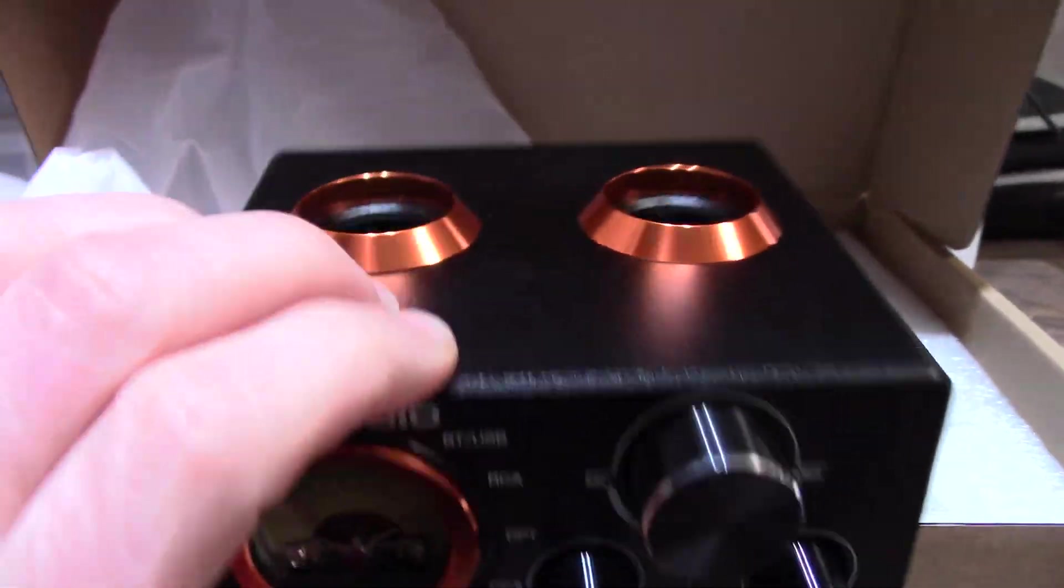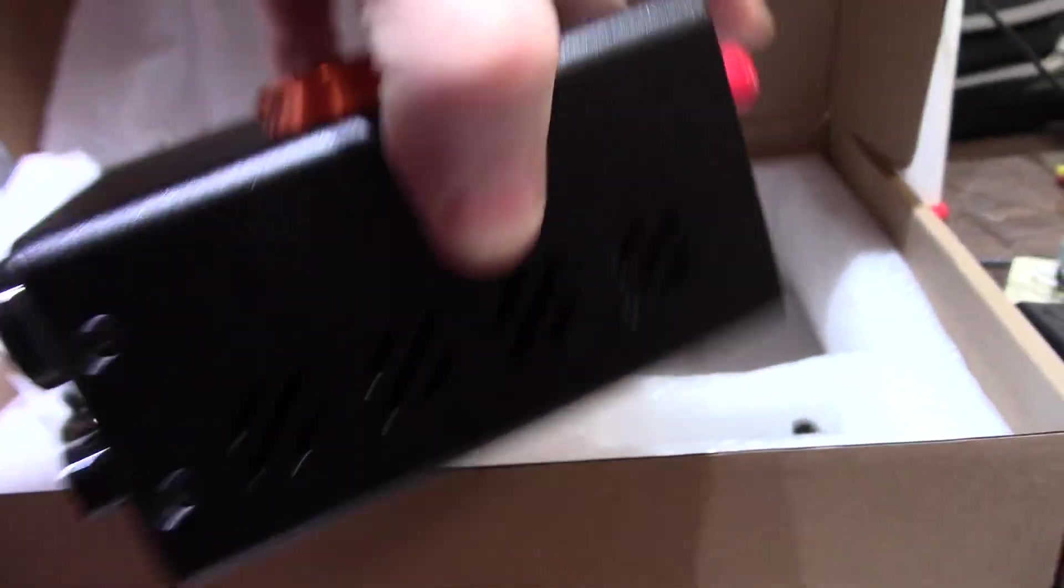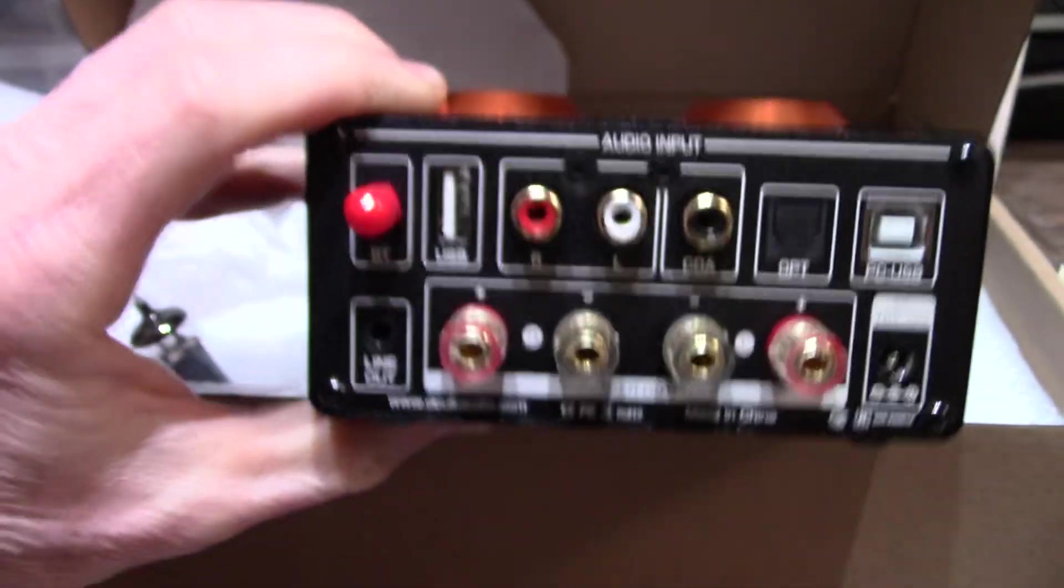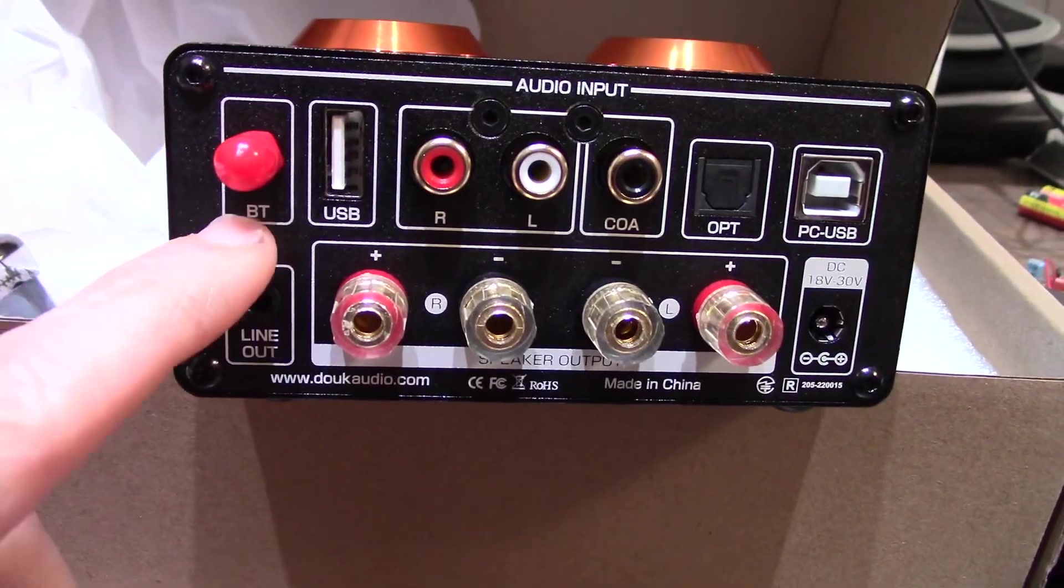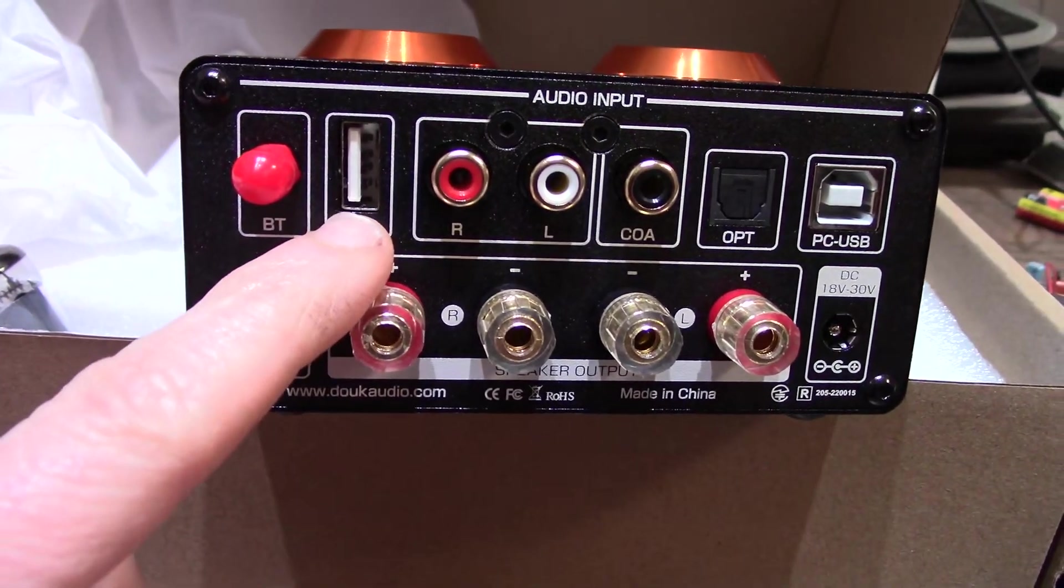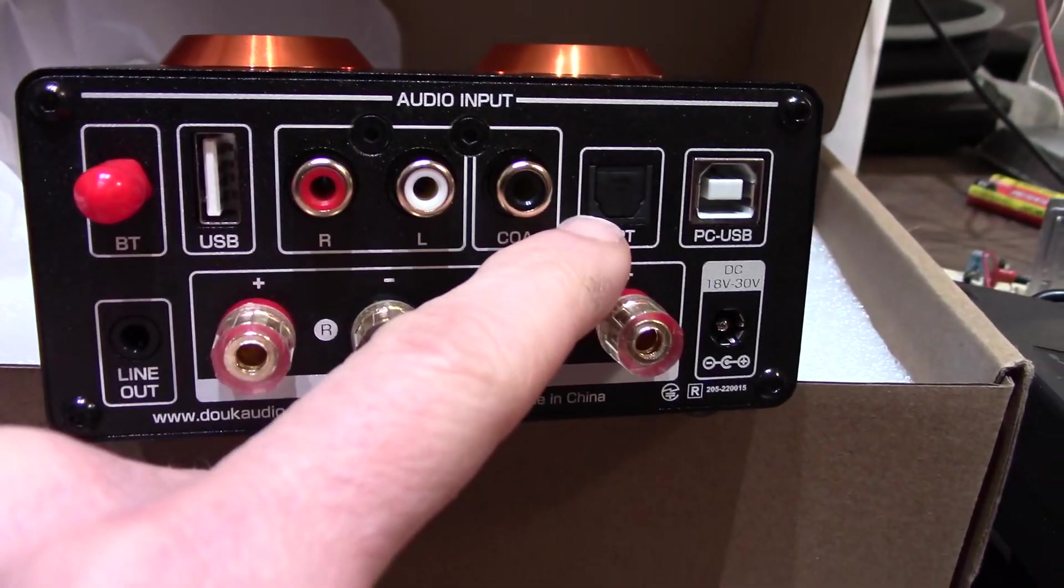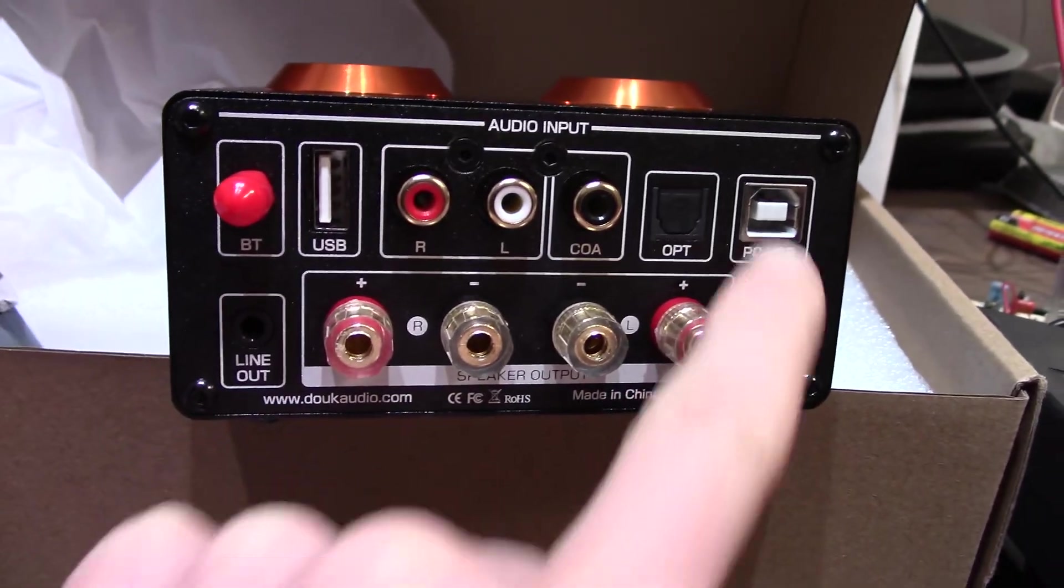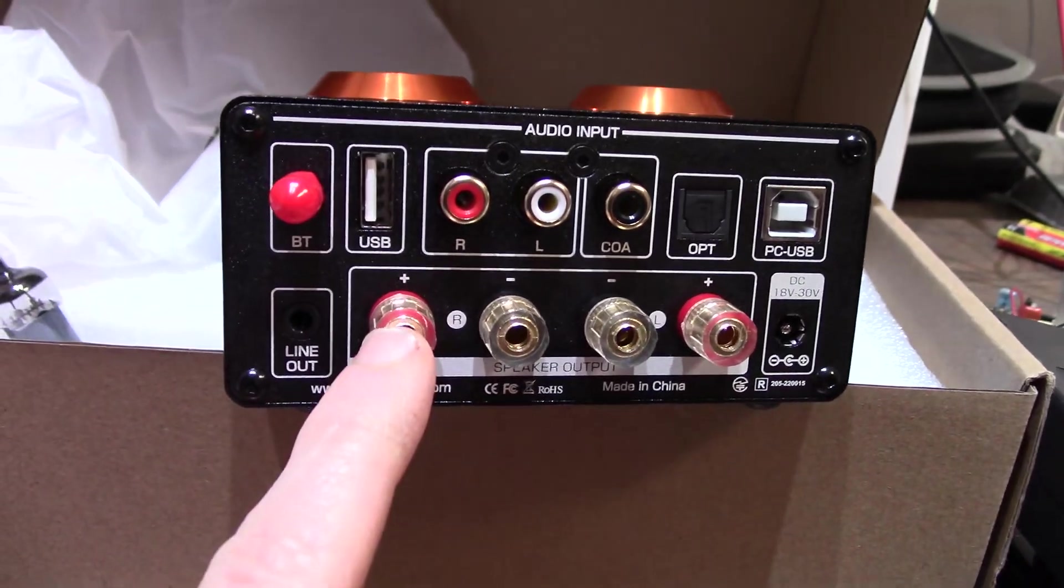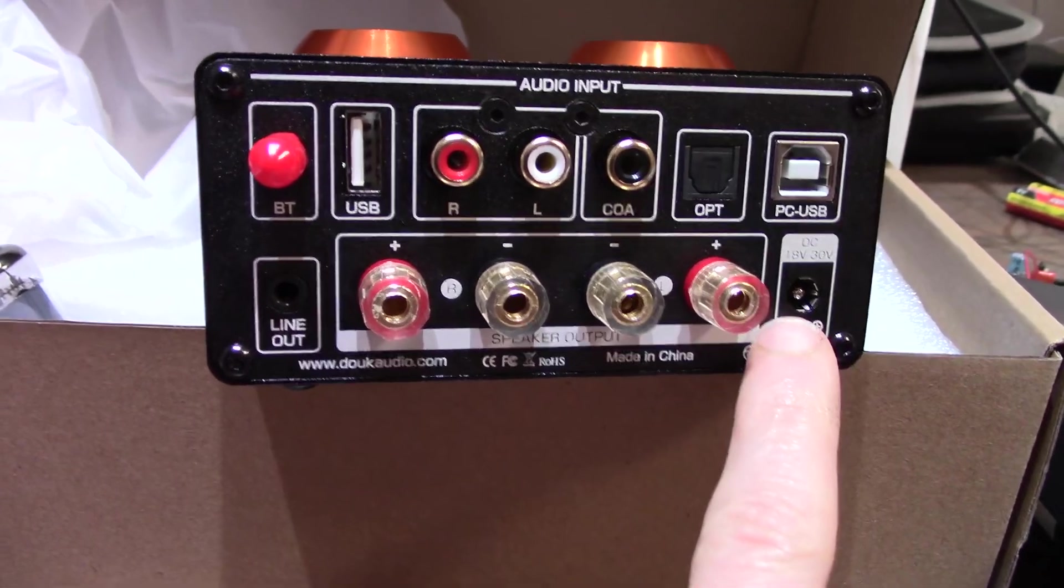On the top, we have sockets for tubes. On the sides, there are vents. And here's the back. Look at all of these inputs we have here. We have Bluetooth, USB, RCA, coax, optical, and PC USB. We have the outputs here for the speakers, the lineout, and power input. And that says 18 to 30 volts.